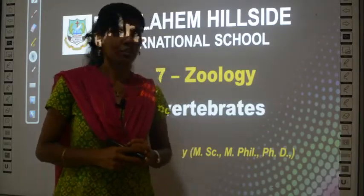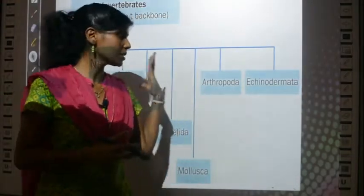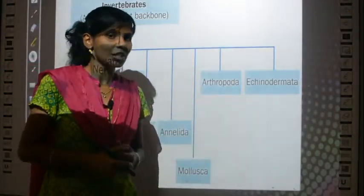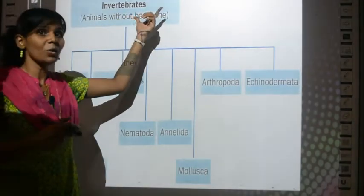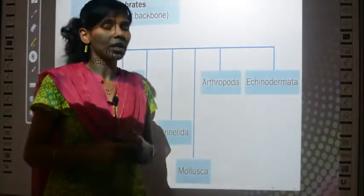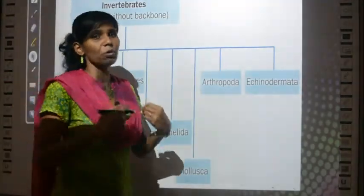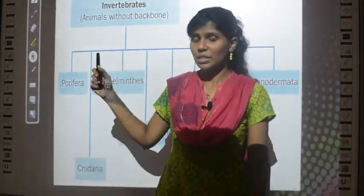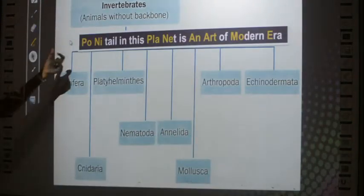Let's get started. I'm displaying this main classification chart again in every class, because unless and until you know this table you will not understand what I am teaching. This chart shows how animals or invertebrates are classified. Invertebrates are animals without a backbone, while we humans have a backbone so we are called vertebrates. I also taught you a shortcut mnemonic: 'Ponytail in this planet is an art of modern era.'